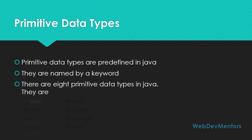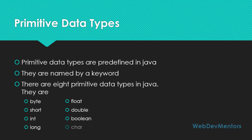The eight primitive data types are: byte, short, int (integer), long, float, double, boolean, and char (character). We'll be seeing each and every data type in detail in the later videos. I'll show you the properties of these data types, how to declare them, how to use them, and various other steps involved with each data type.